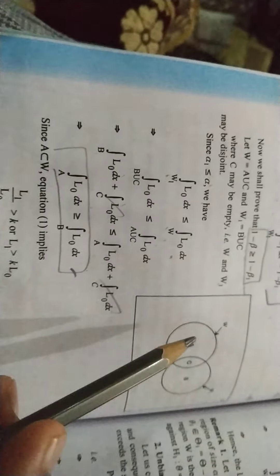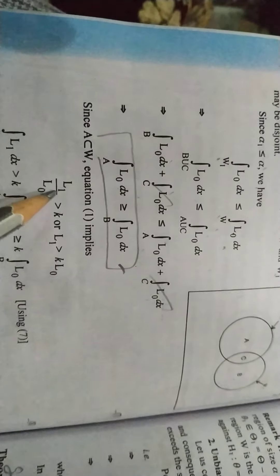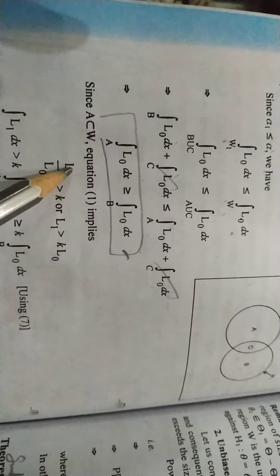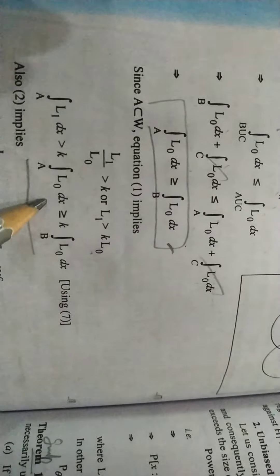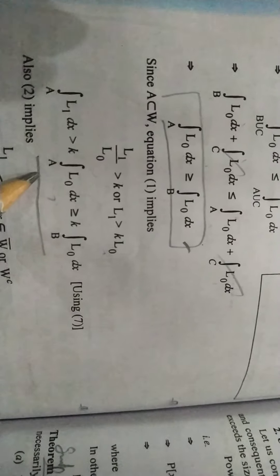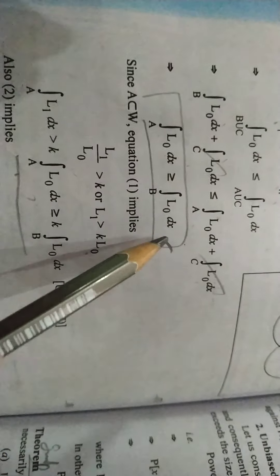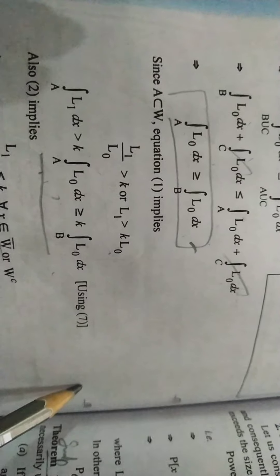Now we know that A is a subset of W. Equation number 1 is L1 upon L0 greater than or equal to K. So cross multiply. The two sides are integration with region A. Now A region is bigger than B. So this has been bigger. This is my equation 1.